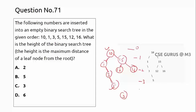The answer is option C. We are counting the distance according to the edges, which is what the question asks. The distances are 1, 2, 3, so the height is 3.